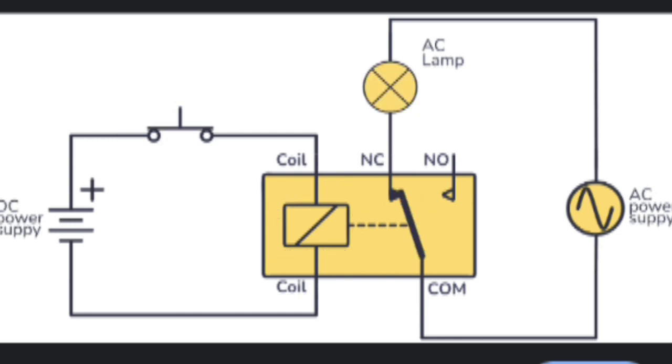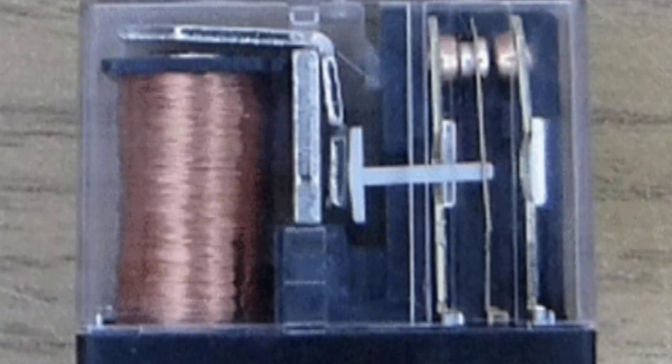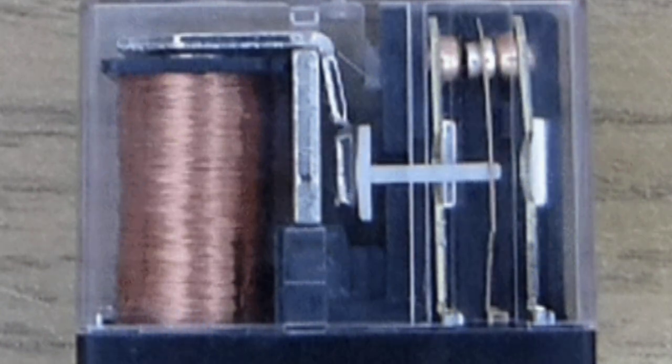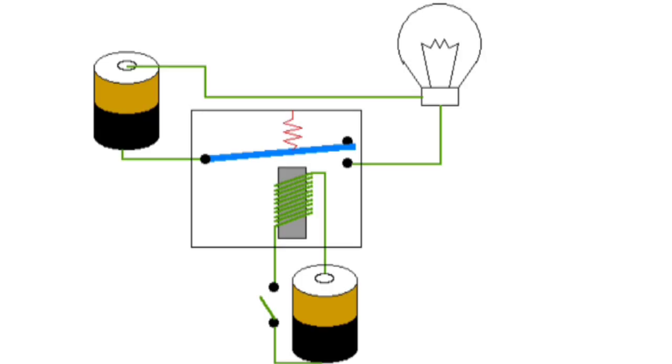Contact Switching: As the armature moves, it pushes or pulls the contacts, changing their position. If the relay was normally open, it will close, allowing current to flow in the main circuit. If the relay was normally closed, it will open, stopping the current.